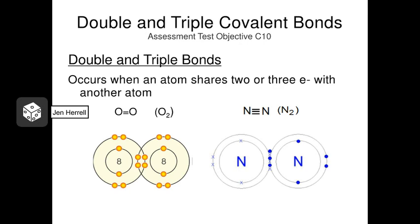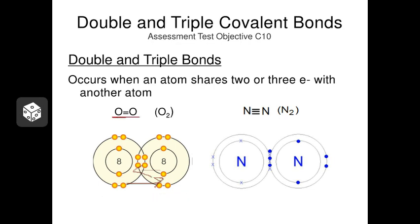Atoms can share two or three electrons with each other. If they share two electrons, we call this a double covalent bond — oxygen gas, O2, is a great example, represented with an equals sign between the two symbols. Each oxygen atom needs two electrons to be happy, so they share two with each other. Atoms can also share three electrons, as we see with nitrogen gas N2, called a triple bond and represented with three lines. Quadruple bonds are possible on paper, but we don't really see them in nature because they put too much strain on the atoms.